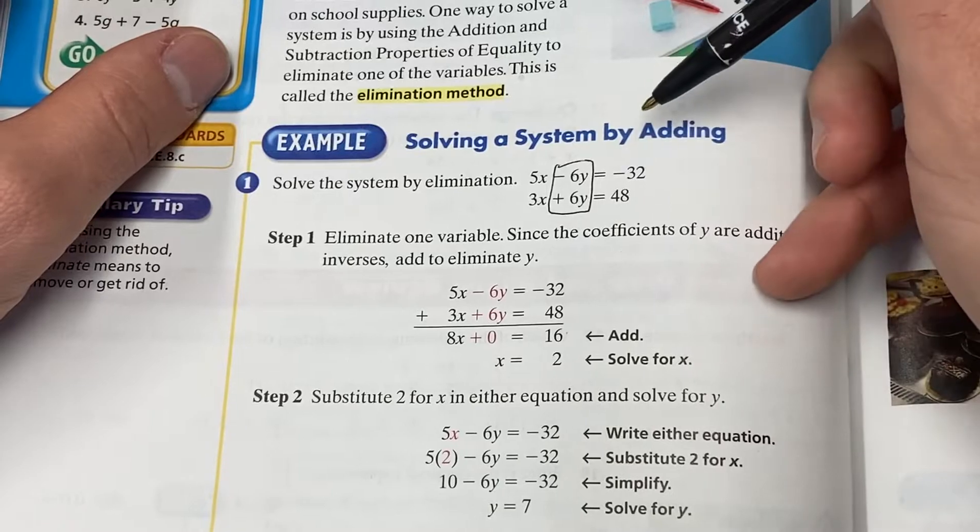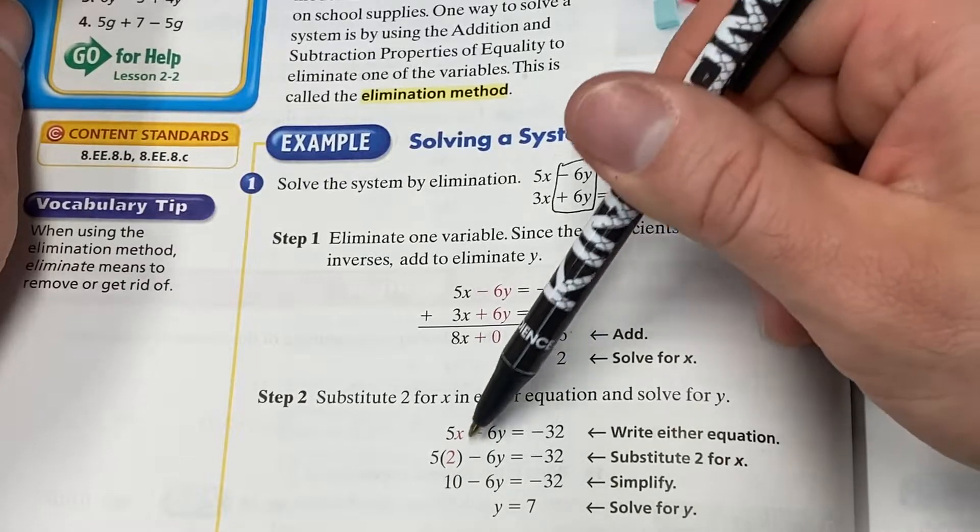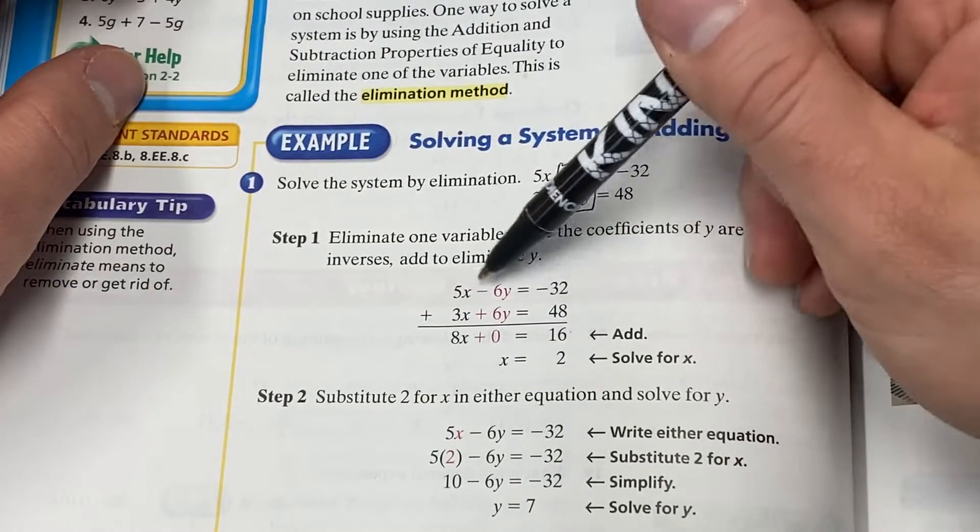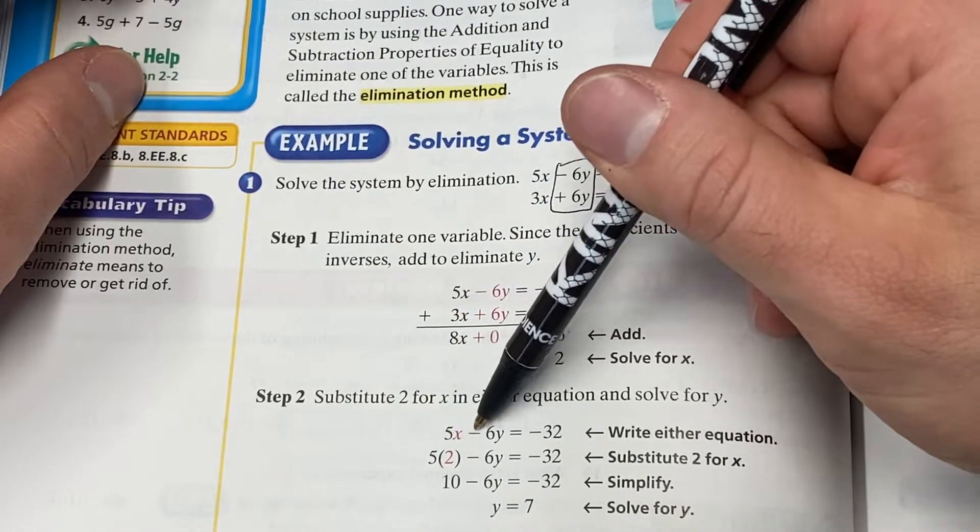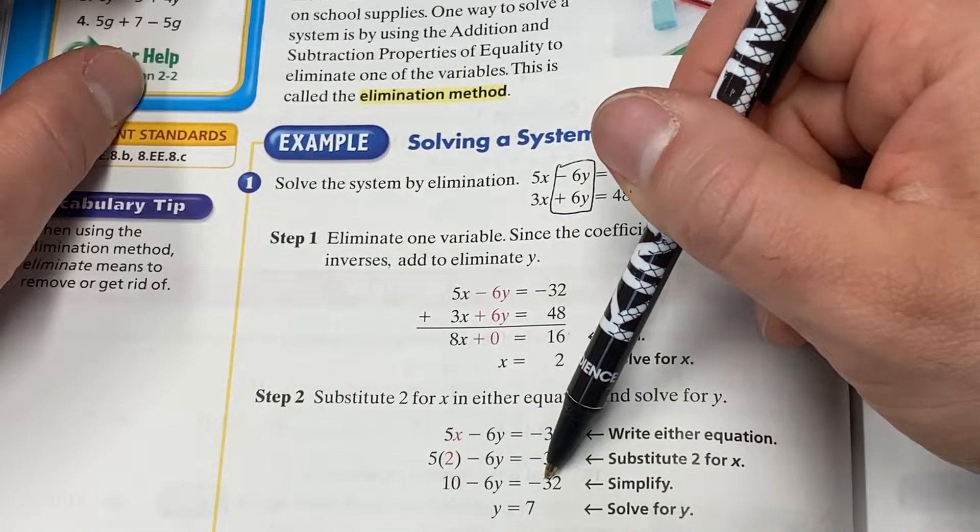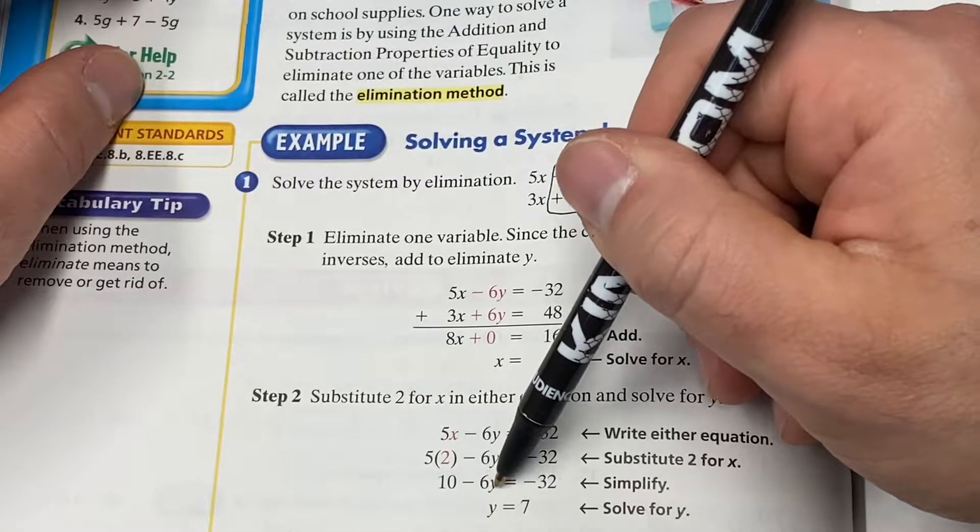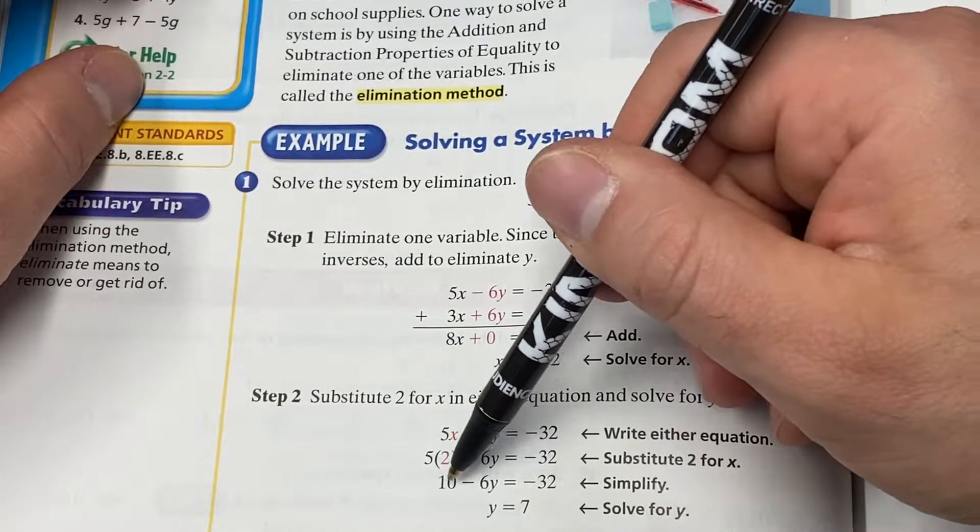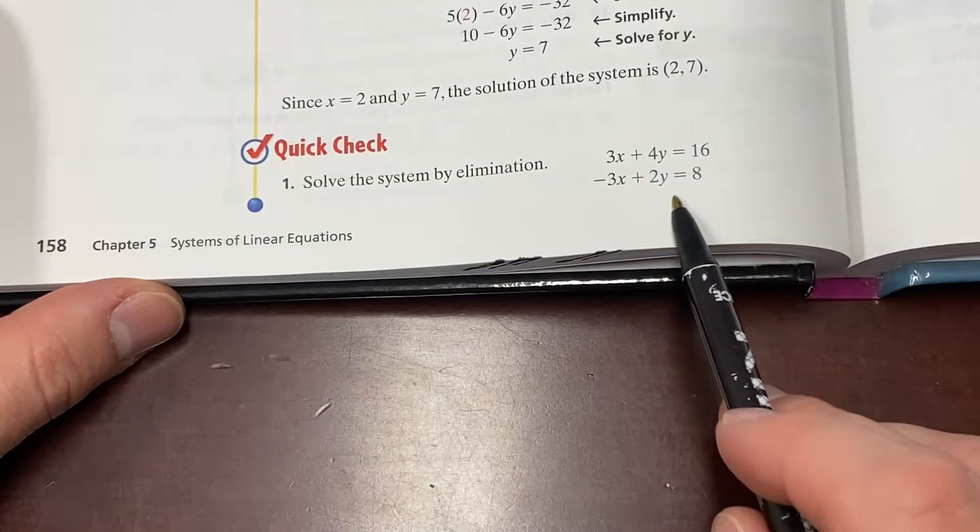Now we're not done. We're only half done. Whenever you're solving a system, you have to find X and Y. We've only found X. So now we plug it back in - we do a little substitution right here. X is two. Choose one of these equations, doesn't matter which one, and plug in X being two. Five times two is 10. 10 minus 6Y equals negative 32. Subtract 10 from both sides, you'll get negative 6Y equals negative 42. Divide by negative six, you'll get positive seven. I wish they would have shown more of the steps there.